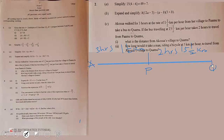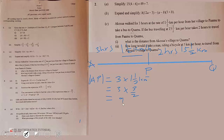We need to find the distance from A to P. If every hour she covers one and a half kilometres, then in three hours she will cover: distance A to P equals 3 times one and a half, which is the same as 3 times 3 over 2, giving nine over 2, or four and a half kilometres.